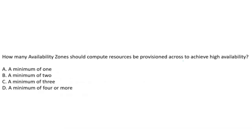How many Availability Zones should compute resources be provisioned across to achieve high availability? Whenever we talk about high availability, a minimum of two Availability Zones is required. Nowadays people also use three, but the minimum is two. The answer is: minimum of two Availability Zones.